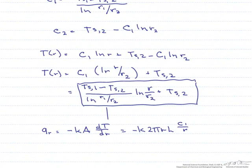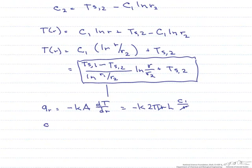If you notice here the r's cancel out and what we are now left with is Qr equals minus k*2πl times this constant. And what this means is that this is not a function of r, so that heat transfer rate is going to stay the same as it goes through the cylinder.